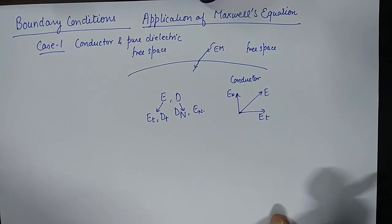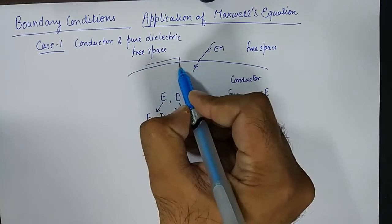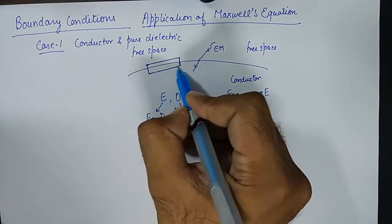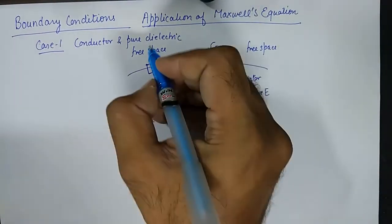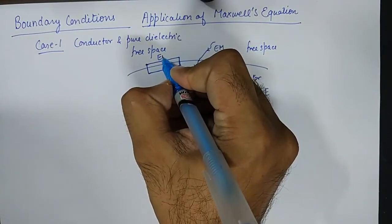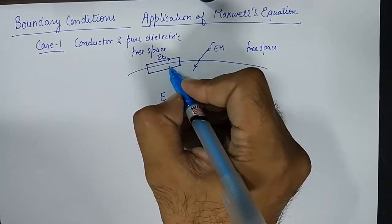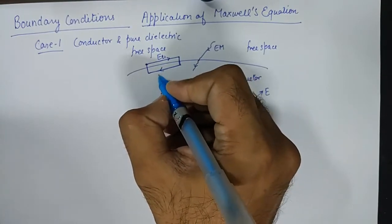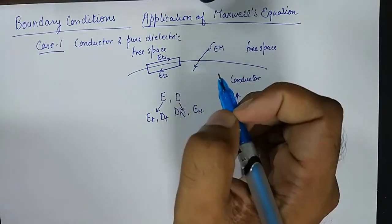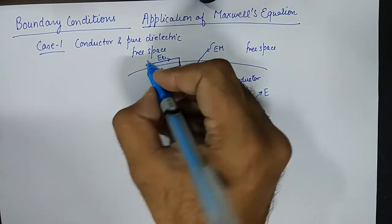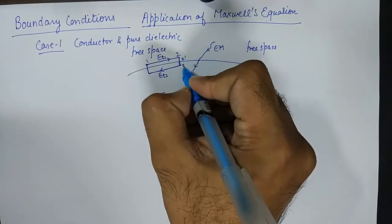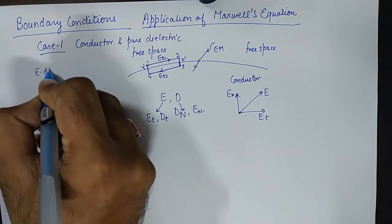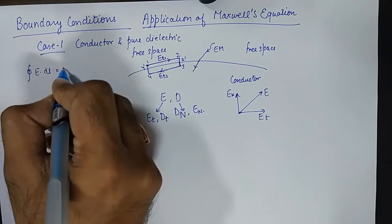To find out the tangential component, we take up a scenario where we consider a rectangular loop. Here, ET1 represents the tangential component of electric field intensity in air, and ET2 represents the tangential component in the conductor. We label the points 1, 2, 2-dash, 3, 4, and 4-dash. Now Maxwell's first equation says that the closed integral of E·dL is equal to 0.